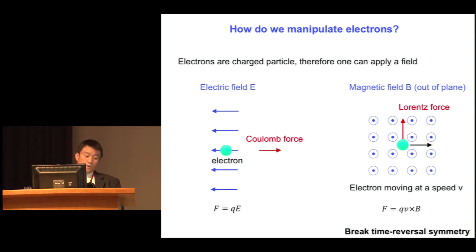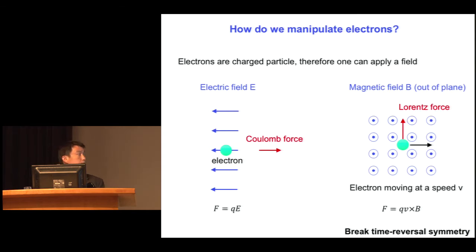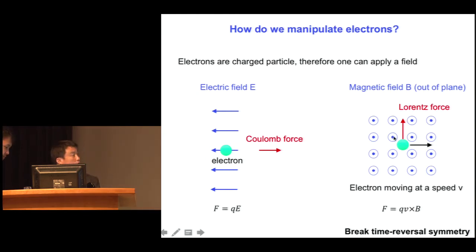More subtly — and this will be the centerpiece of my talk — you can also think about using what's called a magnetic field. In this case, you imagine that you have a moving electron, and in the presence of a magnetic field pointing out of the plane, you generate a force that is perpendicular to the direction of the motion, as well as perpendicular to the direction of the magnetic field.